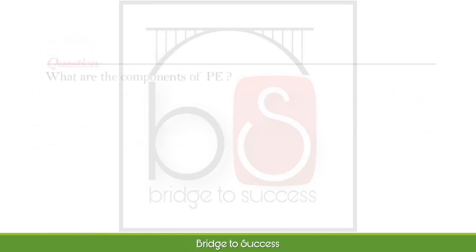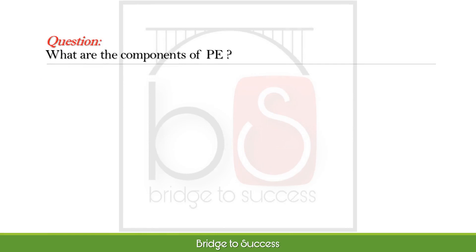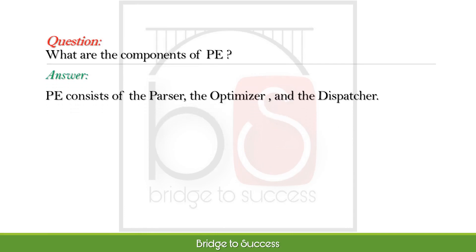What are the components of the parsing engine? The parsing engine consists of the parser, the optimizer, and the dispatcher.